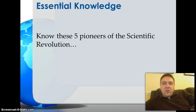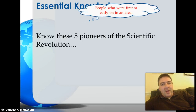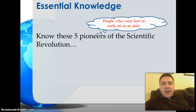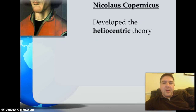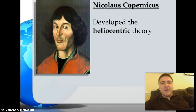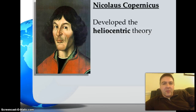For our essential knowledge, we're looking to know about five pioneers of the Scientific Revolution. A pioneer refers to anybody who was first or early in a particular area. The first of these scientists was a Polish astronomer named Nicholas Copernicus.